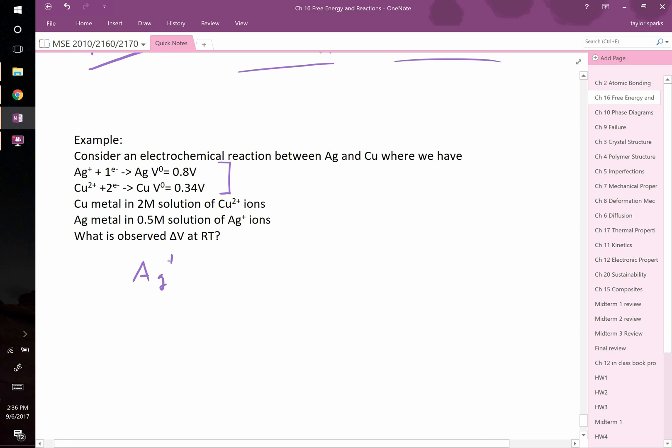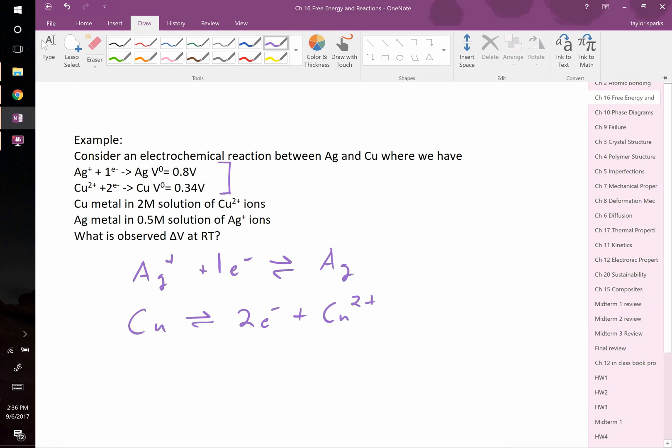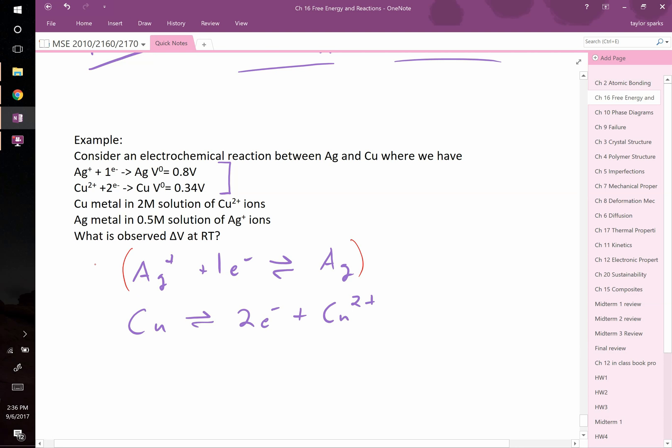So, let's write this out. Ag plus, picking up one electron to form silver metal. Meanwhile, we're going to reverse the copper. This is copper metal, yielding two electrons to form copper 2 plus ions. If we try and add these two equations together, we don't have the same number of electrons on either side. Therefore, we know that we have to modify it. We can multiply both sides by 2. Multiplying both sides by 2 will give us the right number of electrons that cancel out. Note, and this is very important, the voltage, even though we're going to multiply the equation by 2, we do not multiply the voltage by 2. It remains 0.8 volts and this voltage is negative 0.34 volts. It's negative instead of positive because we flipped the reaction and we wrote it as an oxidation reaction instead of a reduction reaction.